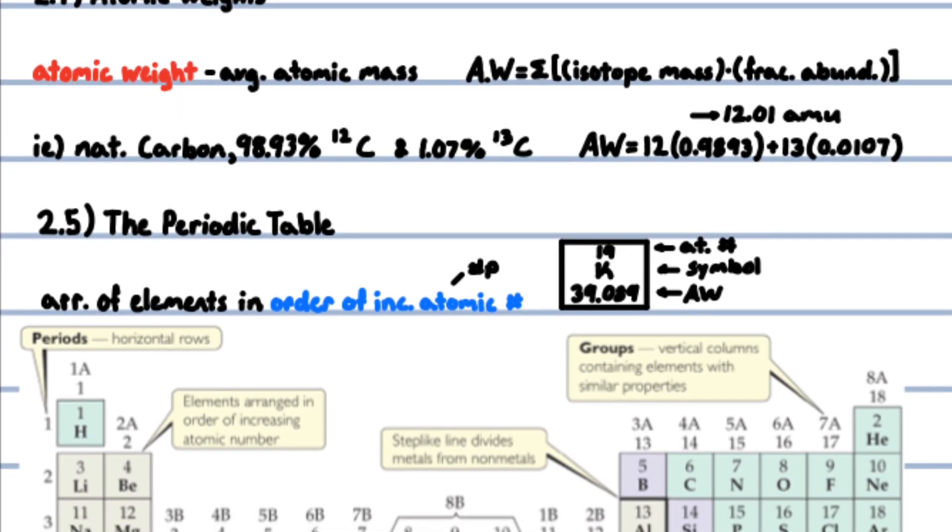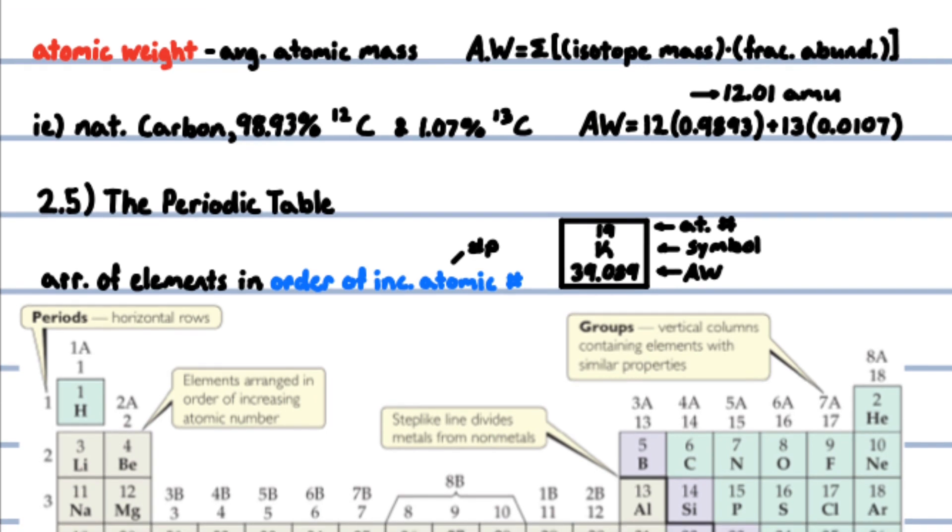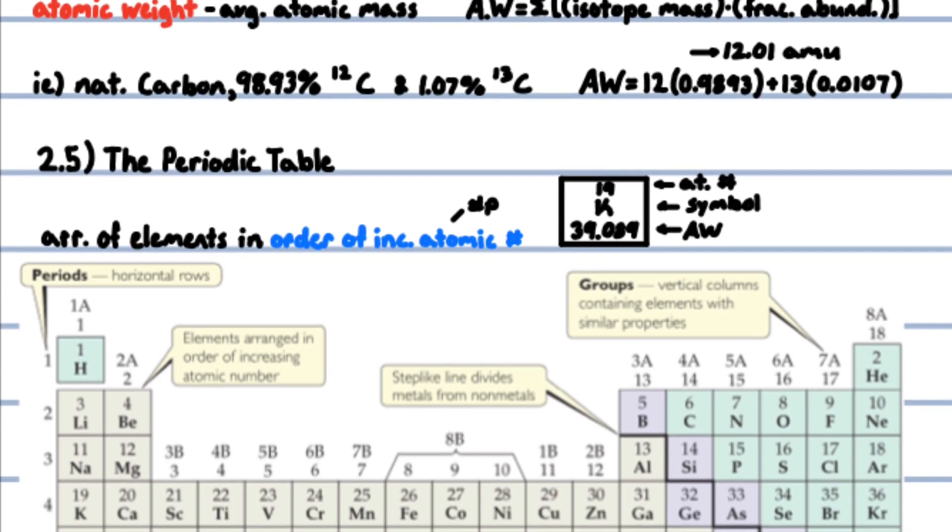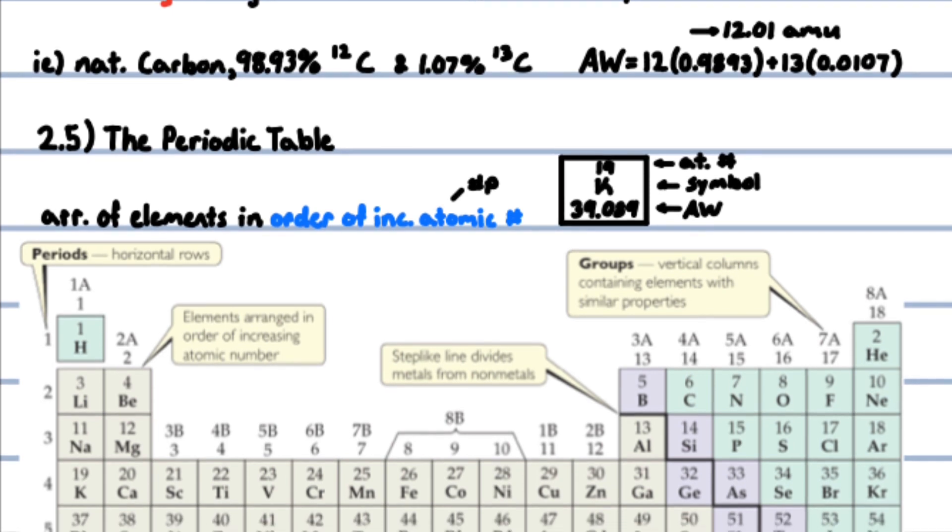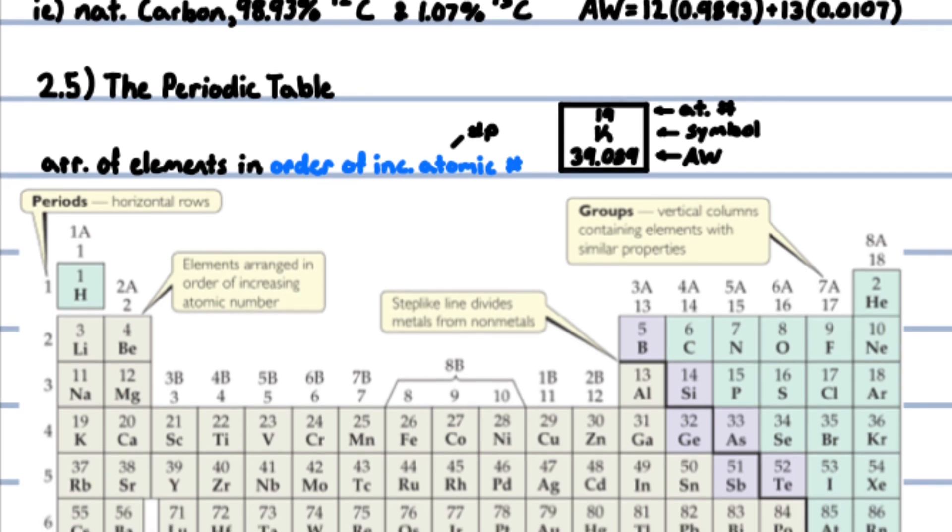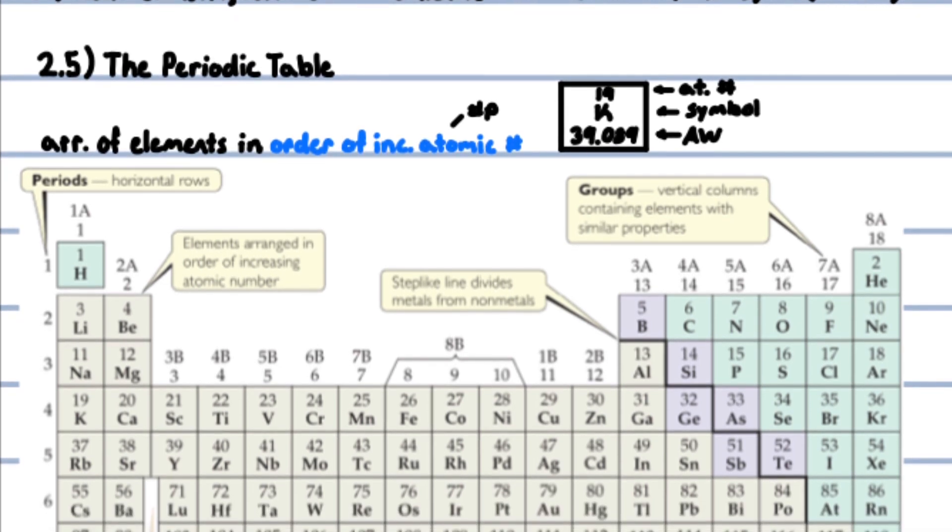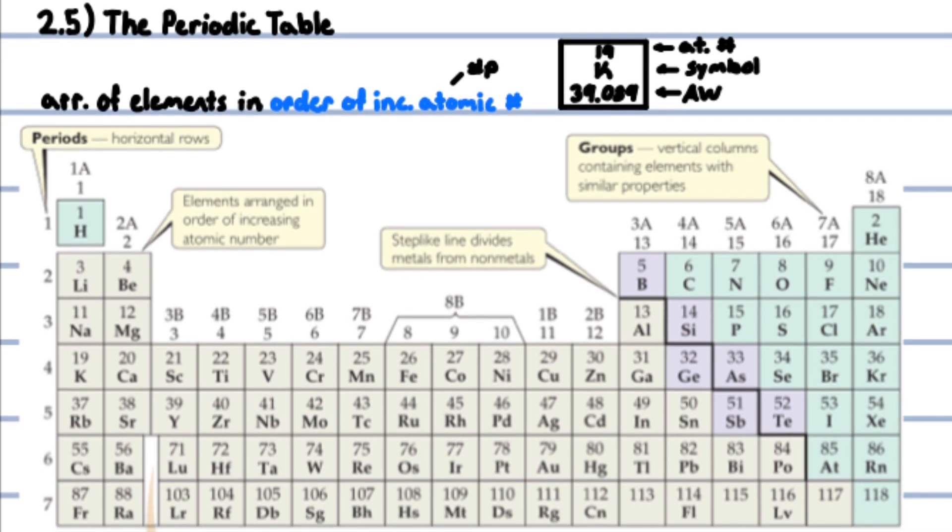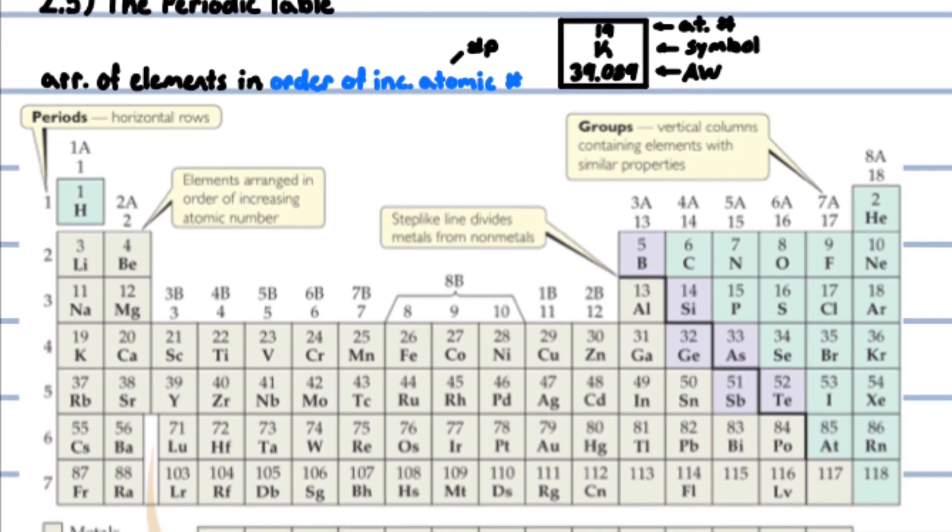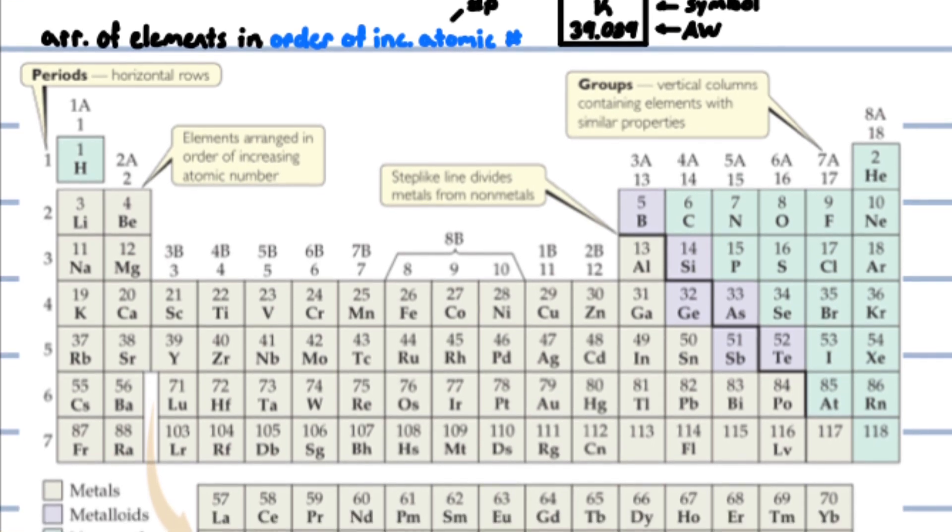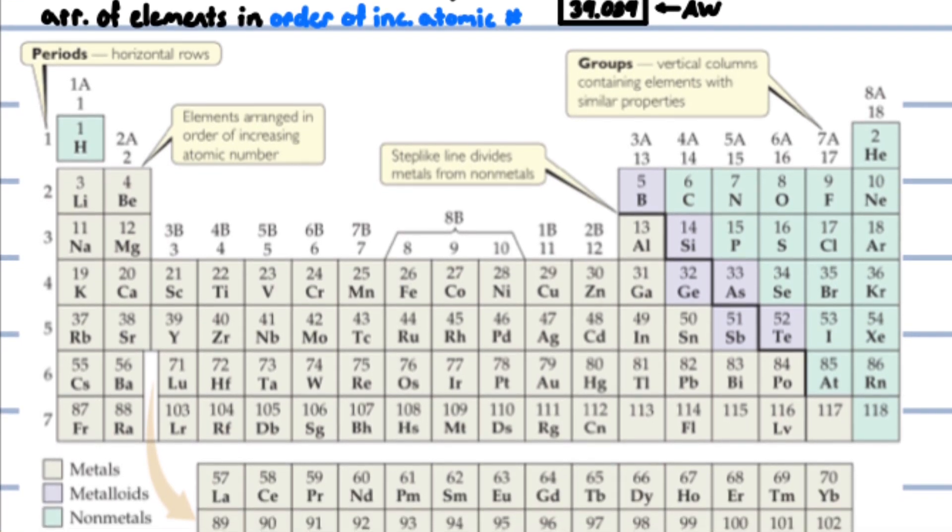The atomic weight of an element is the average atomic mass. It equals the sum of the products of the isotope mass and the fractional isotope abundance over all isotopes of the element. For example, naturally occurring carbon is composed of 98.93% carbon-12 and 1.07% carbon-13. The isotope masses are 12 amu exactly and 13.00335 amu respectively. So the atomic weight is 0.9893 times 12 plus 0.0107 times 13.00335, which equals 12.01 amu.